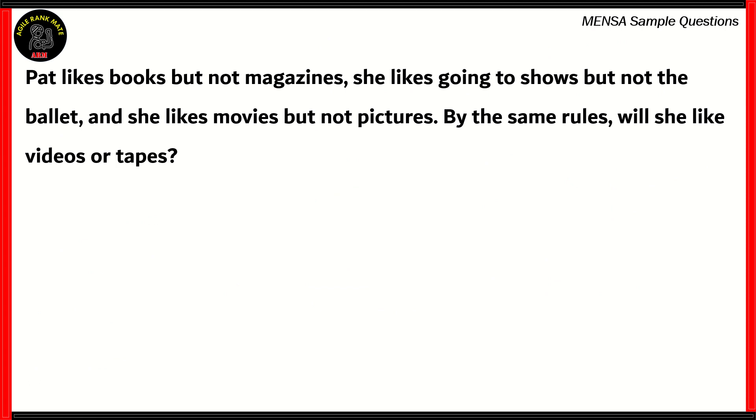Now let's look at a verbal problem. Pat likes books, but not magazines. She likes going to shows, but not the ballet. And she likes movies, but not pictures. Now by the same rules, we need to find out whether she likes videos or tapes. Now in order to do that, it's a good idea to classify her likes and dislikes. So her likes include books, shows, movies. And her dislikes include magazines, ballet, pictures.